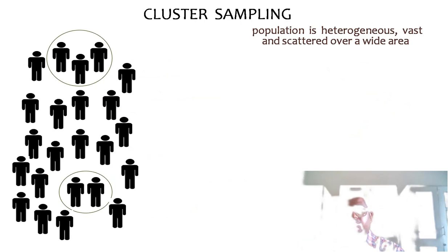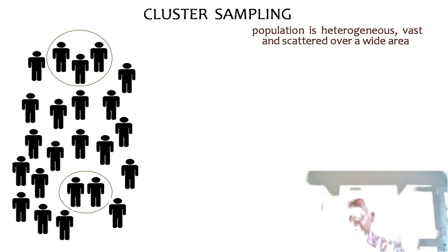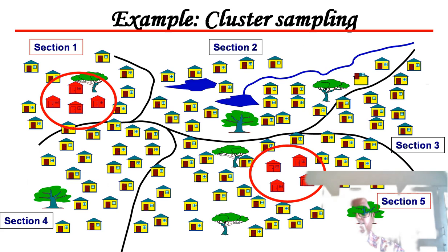Next is cluster sampling, used when the population forms natural groups or clusters such as villages, wards, blocks, or children of a school. A random sample is selected not of individual subjects but of groups or clusters. The sampling units are clusters, and a sample of clusters is selected; then all units in each selected cluster are surveyed. The advantage is that it is administratively simple, but a disadvantage is that since the cluster contains similar characteristics, findings may not be generalized to the parent population.